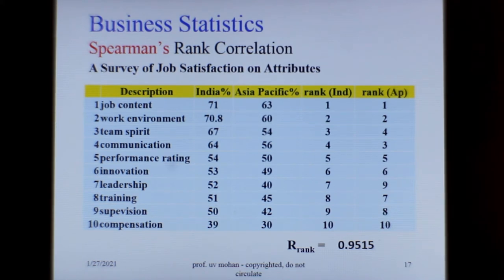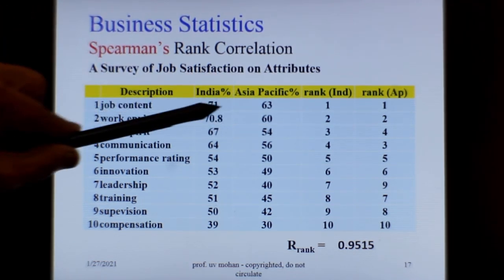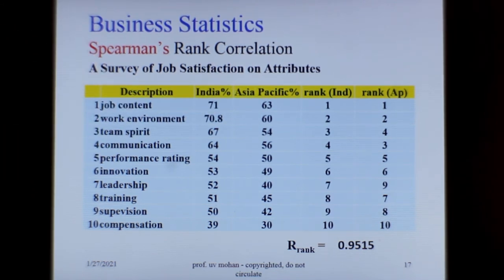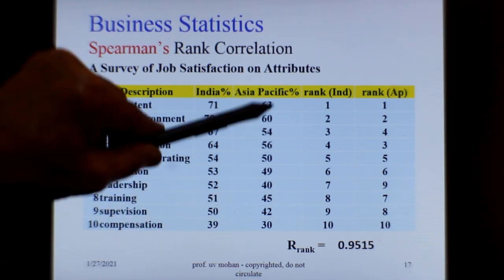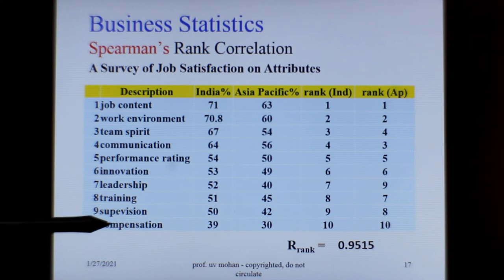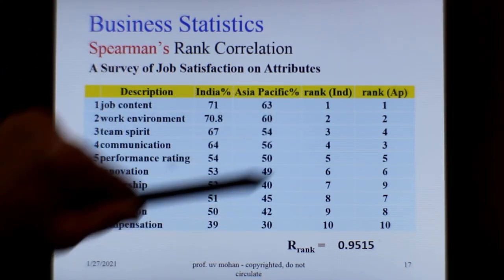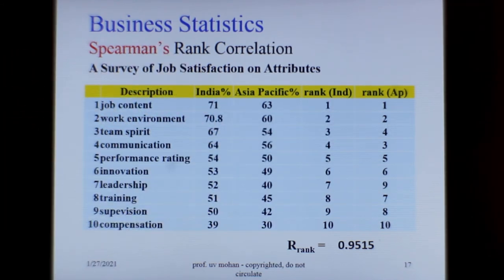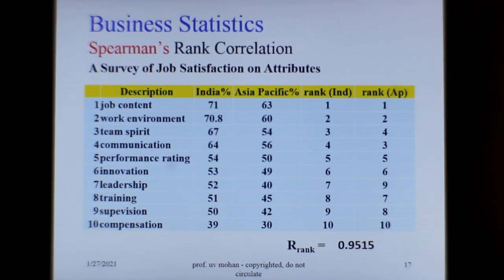Here is another example: a survey of job satisfaction on attributes conducted in India and the Asia Pacific region. There are 10 factors taken, and percentages have been found for various attributes, which are then ranked. Calculating the rank correlation coefficient gives 0.9515, which tells us there is a very good, high-level relationship — indicating that job satisfaction levels in India and the Asia Pacific region are almost the same.